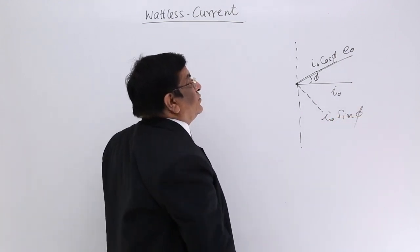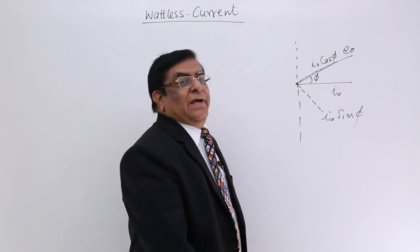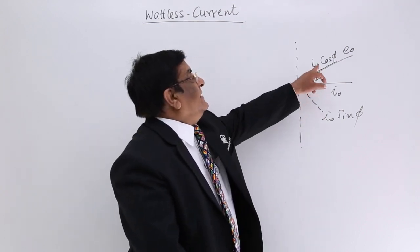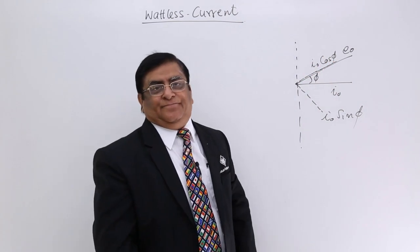These are the two components of this current. Which is the current along E0? I0 cos φ is the current along E0.